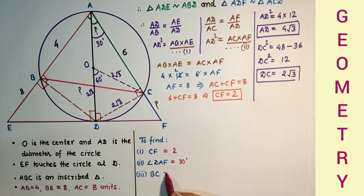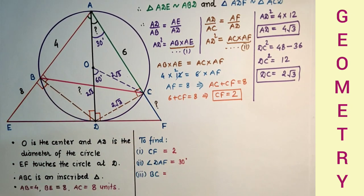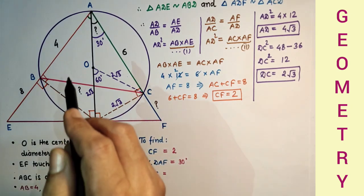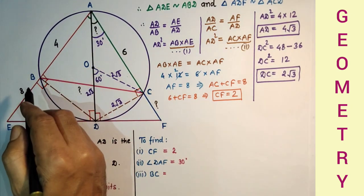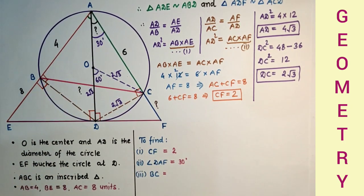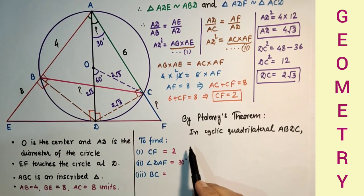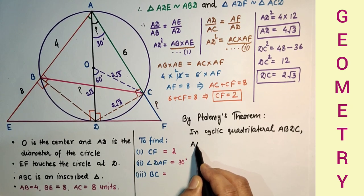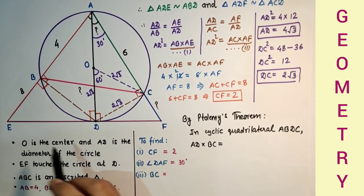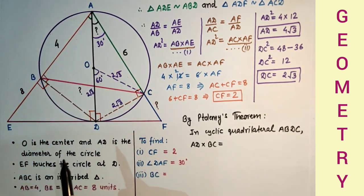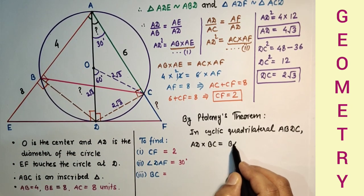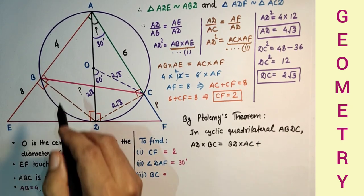Now we have to find BC. To find the length of BC, we know that quadrilateral ABDC is a cyclic quadrilateral because all four vertices lie on the circumference of a circle. So if we use Ptolemy's theorem, by Ptolemy's theorem in cyclic quadrilateral ABDC, product of the diagonals AD×BC is equal to the sum of products: BD×AC plus AB×DC.